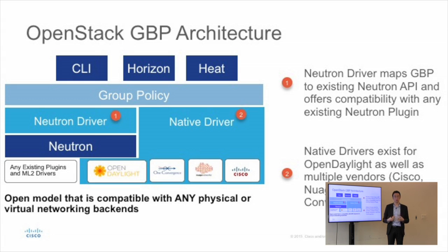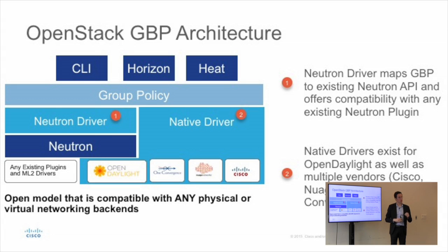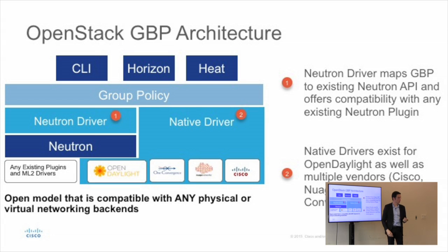We've talked about policy for some time with ACI, and it's coming in the industry more generally. You can see how it could also be interesting and appealing for Docker. By adding policy in OpenStack, you'll start configuring OpenStack — instead of the native way — by creating endpoint groups and contracts. And this doesn't mean you have to use ACI; whatever you use underneath is your choice.